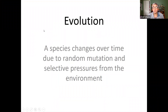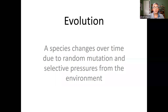Evolution — just the word — can be potentially controversial. What does evolution mean? In its bare bones form, you can define it as the idea that a species changes over time due to random mutation and selective pressures from the environment. We know that random mutations occur in organisms. In some cases we know why — there could be a trigger, for example radiation. In other cases, we don't know why mutations just spontaneously occur as the DNA is being replicated.